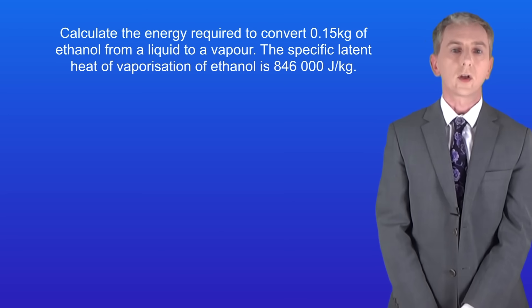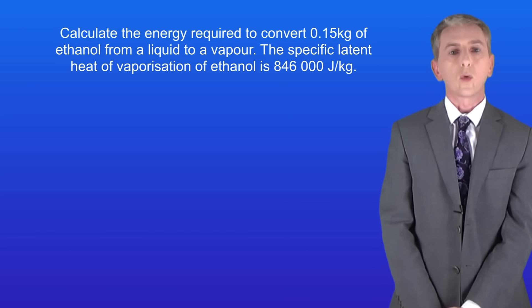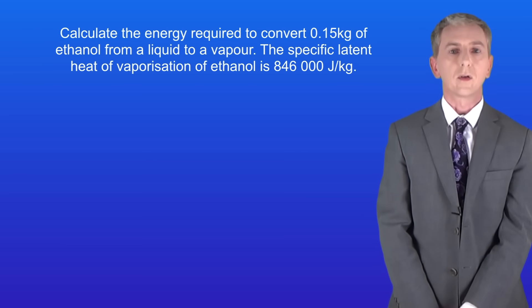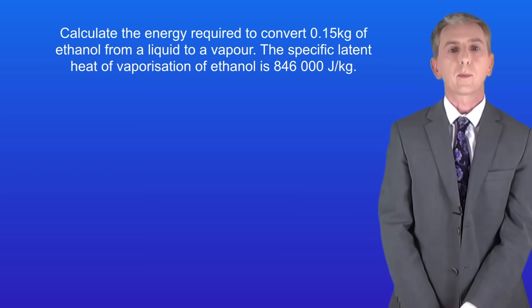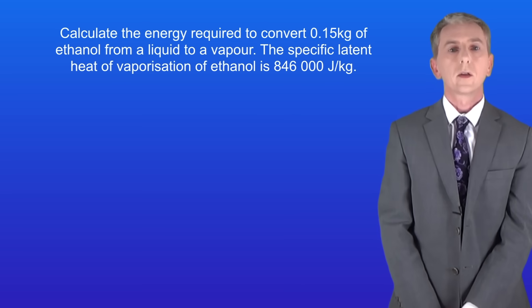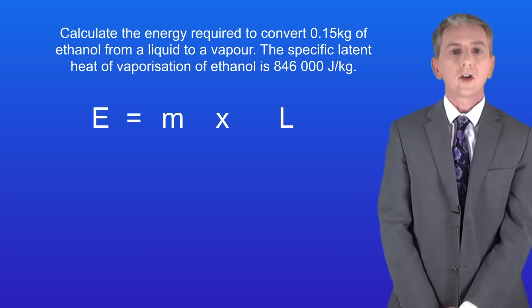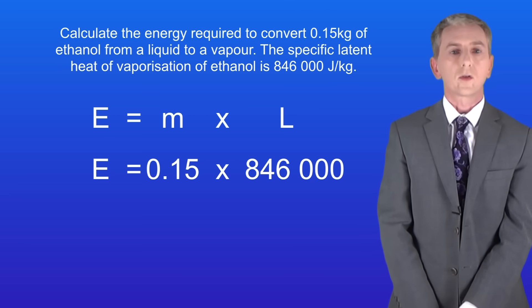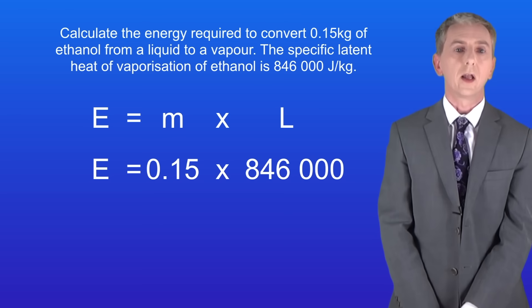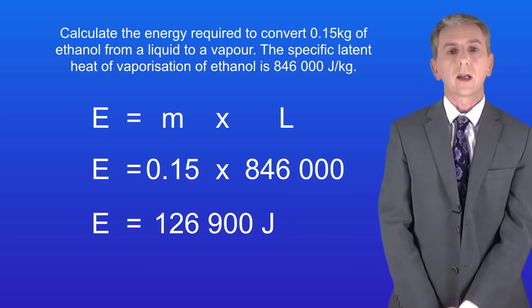Here's another question. Calculate the energy required to convert 0.15 kilograms of ethanol from a liquid to a vapor. The specific latent heat of vaporization of ethanol is 846,000 joules per kilogram. Pause the video now and try this yourself. The energy for a change of state is the mass multiplied by the specific latent heat: 0.15 kilograms × 846,000 joules per kilogram gives us an energy of 126,900 joules.